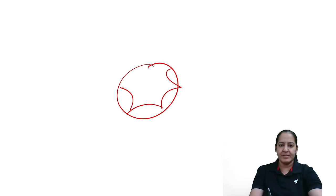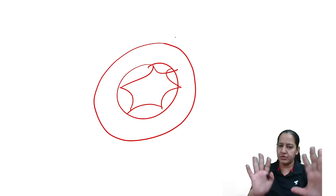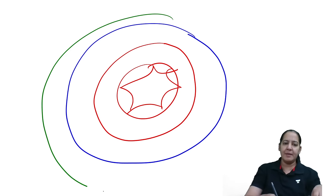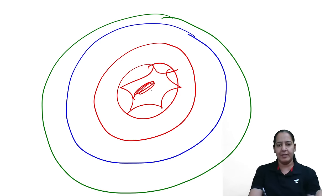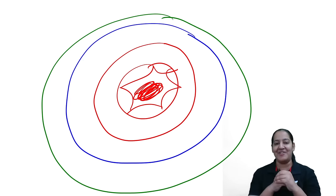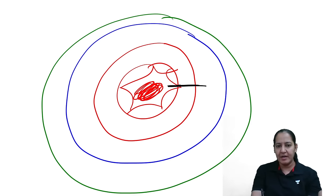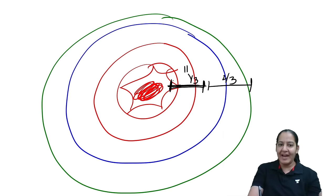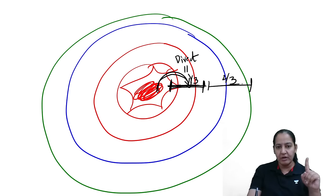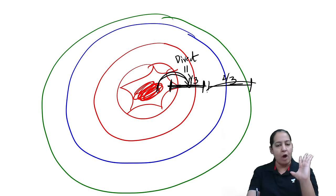Now consider the blood supply of the artery wall. The lumen contains blood, but who supplies blood to the wall itself? We divide the artery into two portions: the inner one-third and the outer two-thirds. The inner one-third is supplied by direct diffusion from the luminal blood. The outer two-thirds cannot be supplied directly because it is far from the lumen.